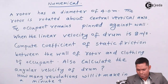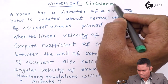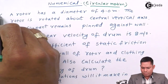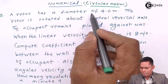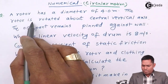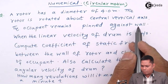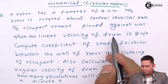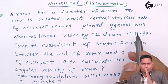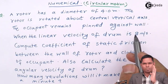Friends, let us see the numerical that we have considered for circular motion. A rotor has a diameter of 4 meters — a rotor which rotates like a cylindrical drum, rotated about the central vertical axis. The occupant remains pinned against the wall when the linear velocity of the drum is 8 meters per second. This is the minimum velocity required so that the person inside is not falling down.